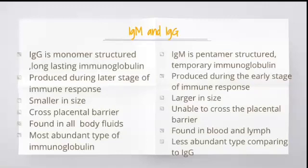IgG is produced during the later stage of immune response whereas IgM is produced during the early stage of immune response. IgG is smaller in size whereas IgM is larger in size. IgG can cross the placental barrier whereas IgM is not able to cross the placental barrier.